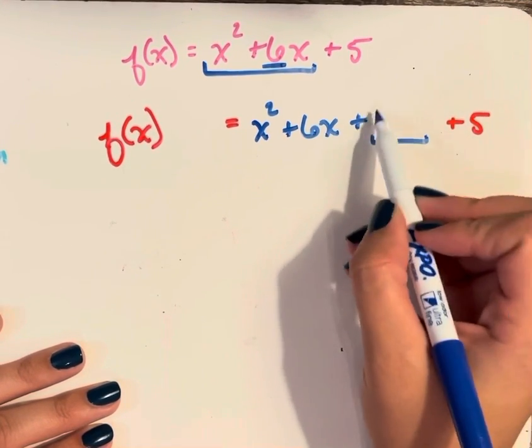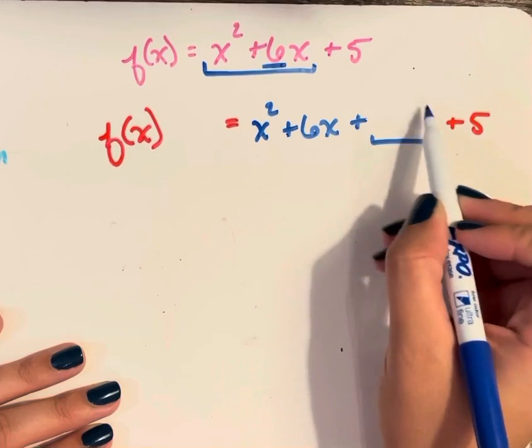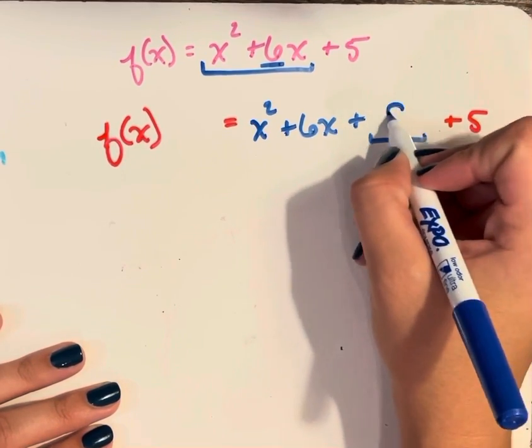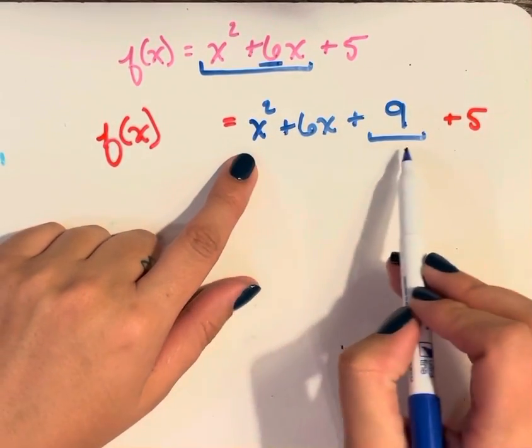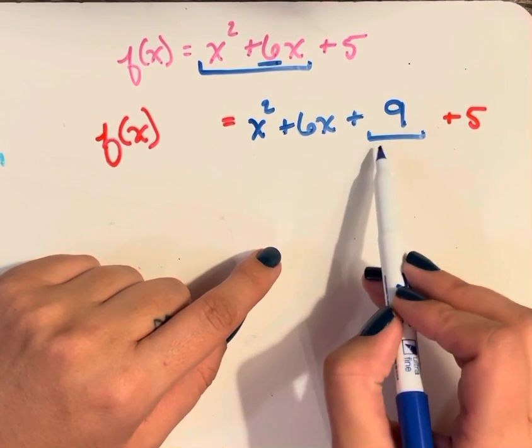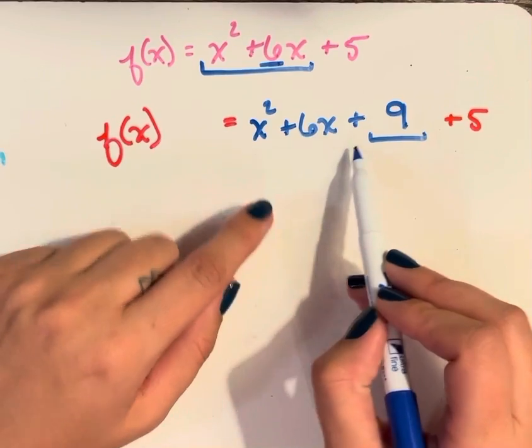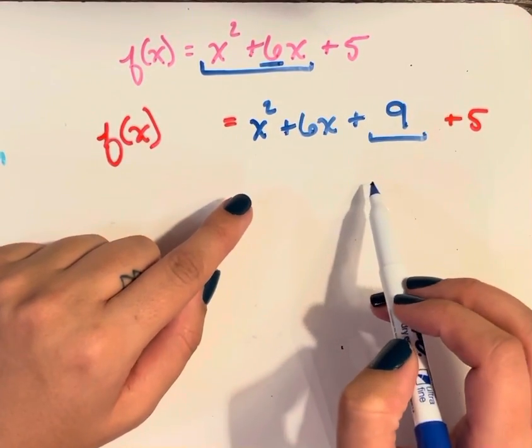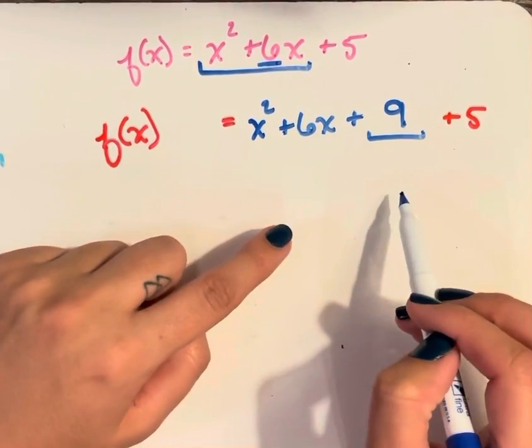So 3 squared is going to give me the number here. 3 squared is 9. So now I have this perfect square trinomial because I have 3 squared here, 3 times 2 as the coefficient of x. So this will factor really nicely into the same factor twice.